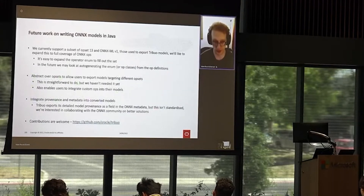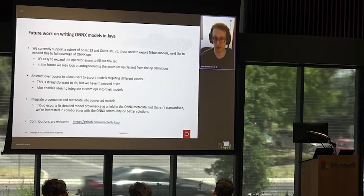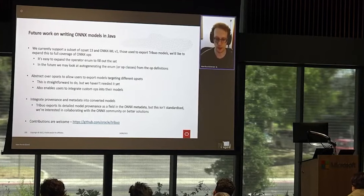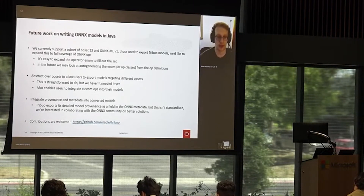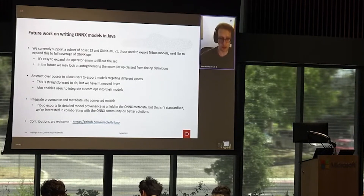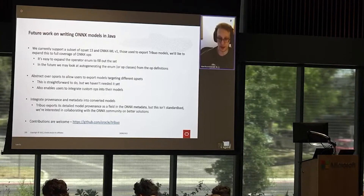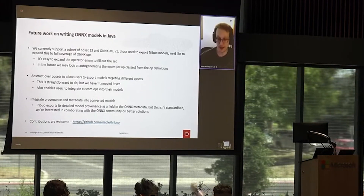We currently support a subset of ONNX Opset 13 and the ONNX ML operators — basically everything we needed to export the set of models we had. We'd like to expand this to cover the full set of ONNX ops, and we might look at automatically generating the operator enum from the op def files in C++. We're also looking at abstracting over Opsets to allow users to supply different versions and custom ops. Additionally, we'd like to integrate standardized provenance and metadata into converted models, and we're interested in the work Intel are doing on standardizing this. Contributions are welcome.